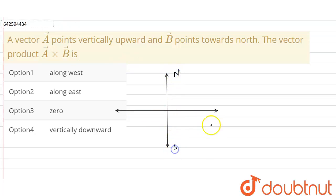Now the A vector is pointing vertically upwards, so it will be represented by a dot. This is A vector. Now the axis over here is: this is y, this is x and this is z.